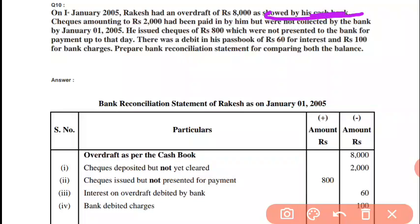He issued checks of 800 that were not presented to the bank — check issued but not yet presented for payment. Cashbook ke according lag rahe hain, to jab payment ke liye aayega to cashbook mein plus ho jayega, isliye plus kar diya gaya. Aage keh raha hai: there was a debit balance of 60 rupees interest and 100 for bank charges — aapke account se paisa kat gaya. Passbook ne minus kar diya, bank ne paisa kaat li, cashbook update nahin, to 60 aur 100 minus kar denge.